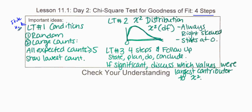We talked about that — essentially, the null is the claim assumed to be true, and the alternative is assuming the claim to be false. Next is our plan.